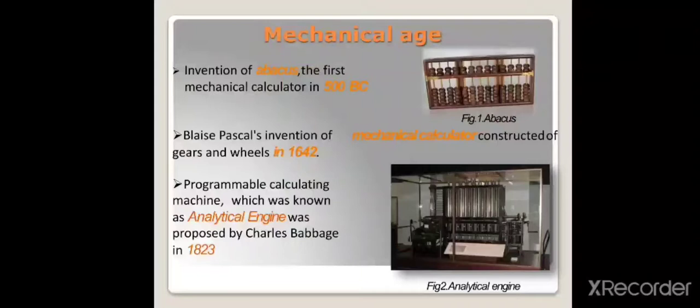Let's start with the mechanical age. First, in 500 BC, the abacus was invented as the first mechanical calculator. Then in 1642, a mechanical calculator made from gears and wheels was invented by Blaise Pascal. Charles Babbage proposed the analytical engine in 1823. So the mechanical age included the abacus, mechanical calculator, and analytical engine.